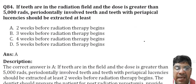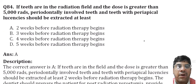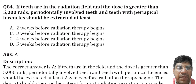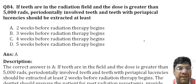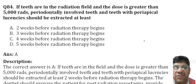If the teeth are in the radiation field and the dose is greater than 5000 rads, periodontically involved teeth and teeth with periapical radiolucency should be extracted at least two weeks before radiation therapy begins. This is done to minimize the risk of complications and prepare the patient for potential side effects of radiation therapy, including xerostomia and its associated dental care requirements.